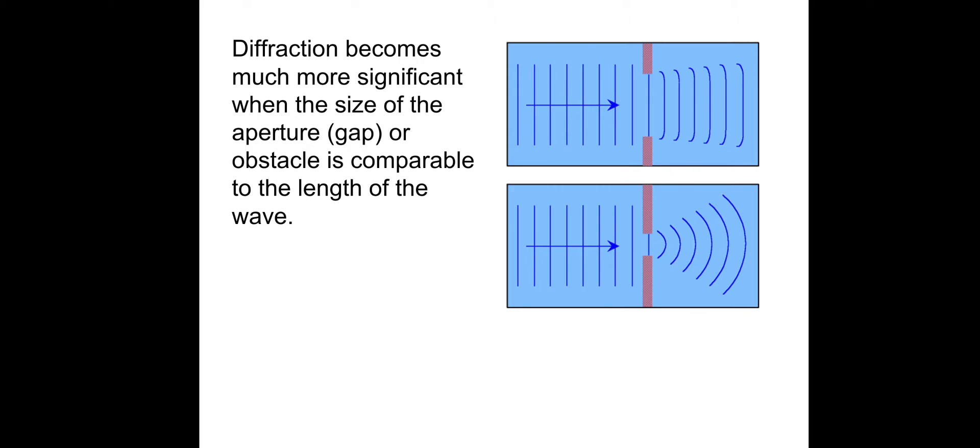So diffraction becomes much more significant when the size of the aperture or the gap or obstacle is comparable to the length of the wave. So in terms of this diagram, this would be the wavelength. And as you can see, the aperture or the gap is not really comparable. So the diffraction is pretty weak, whereas in the image below, the wavelength is comparable with the aperture size. So you would get much more significant diffraction in this case compared to the top image.